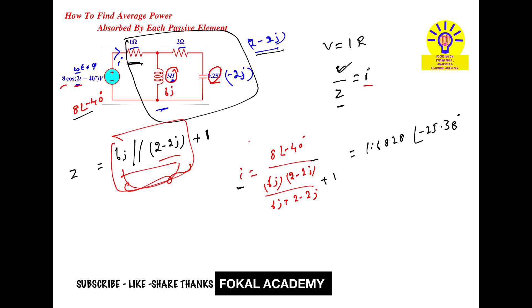The average power in the 1 ohm resistor is P_avg = I²R/2, where I is the magnitude. So P = (1.6828)²(1)/2. Using a calculator and simplifying, we get 1.4159 watts. This is the average power in the 1 ohm resistor.